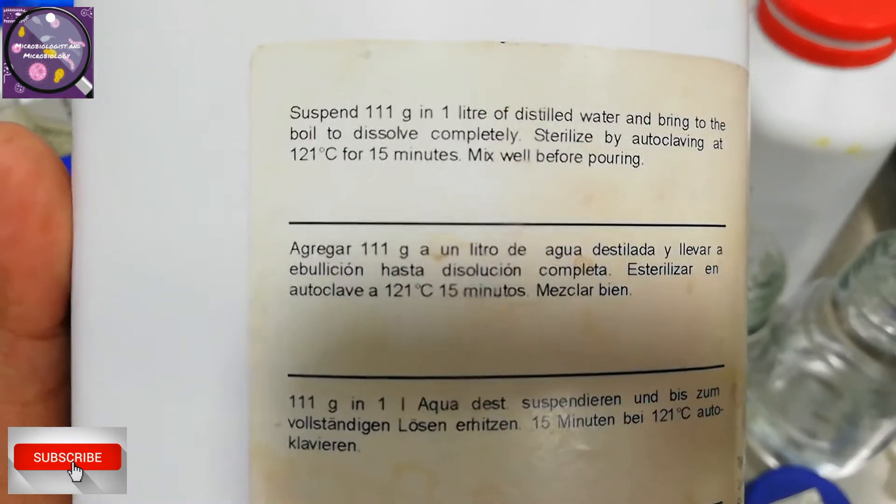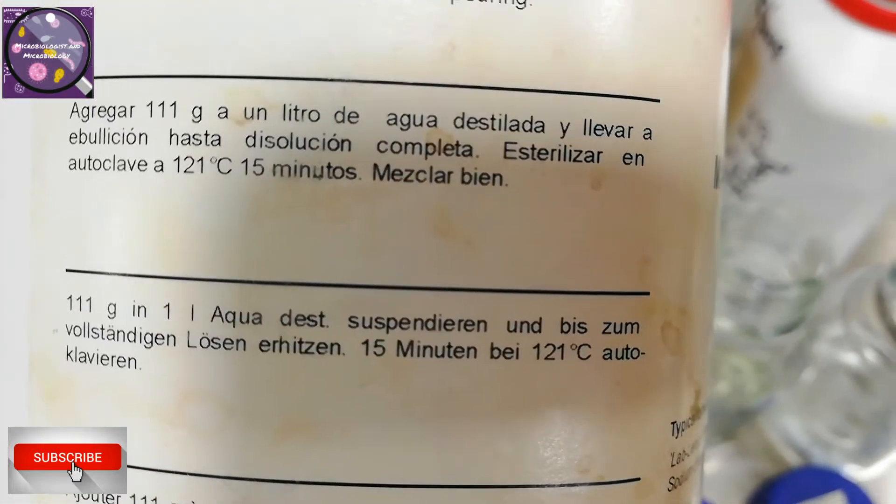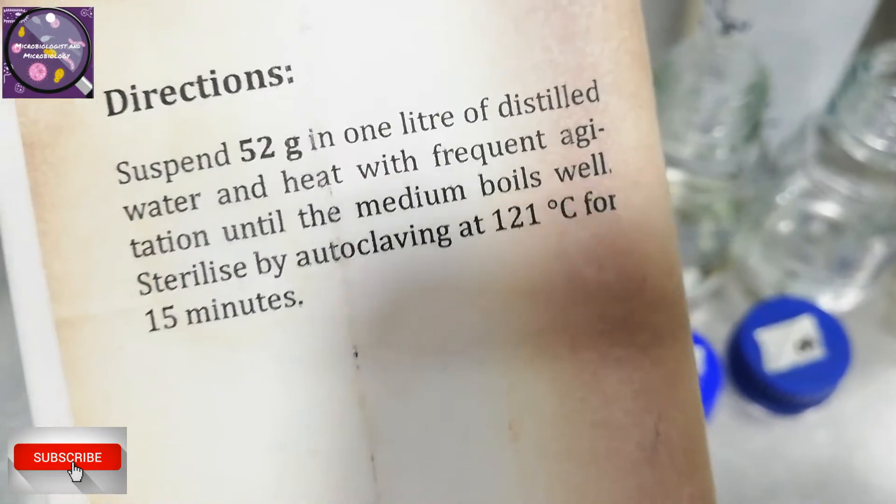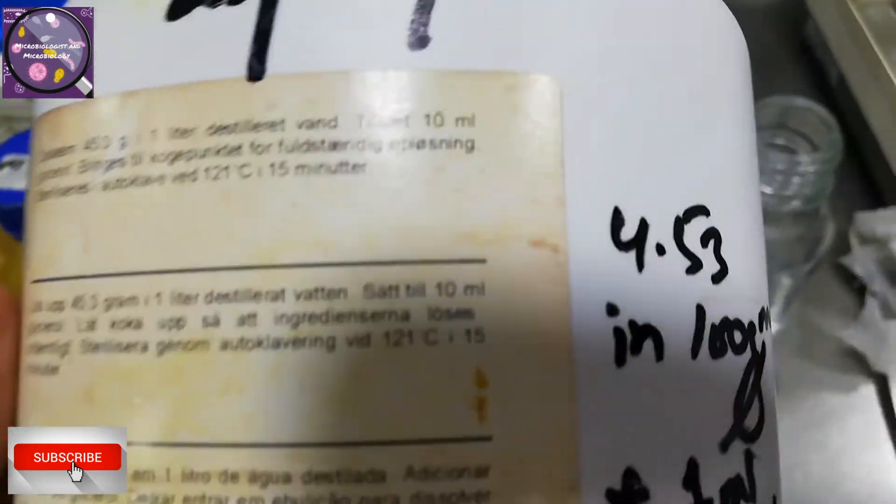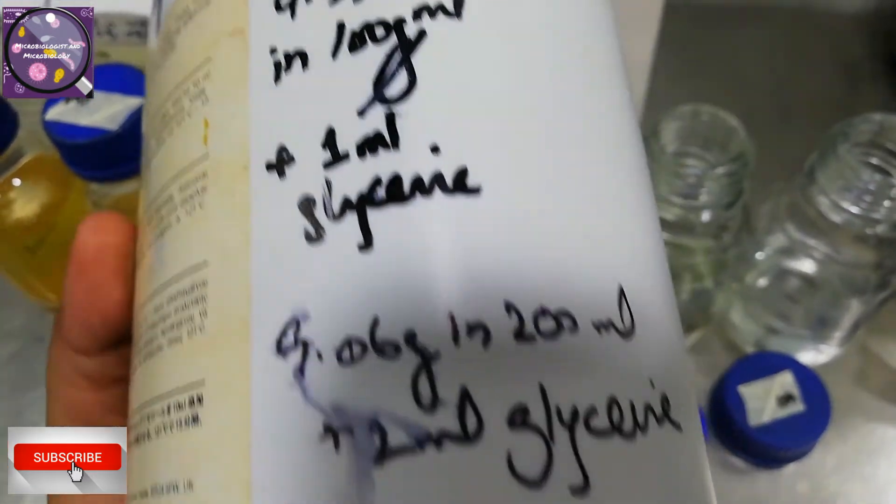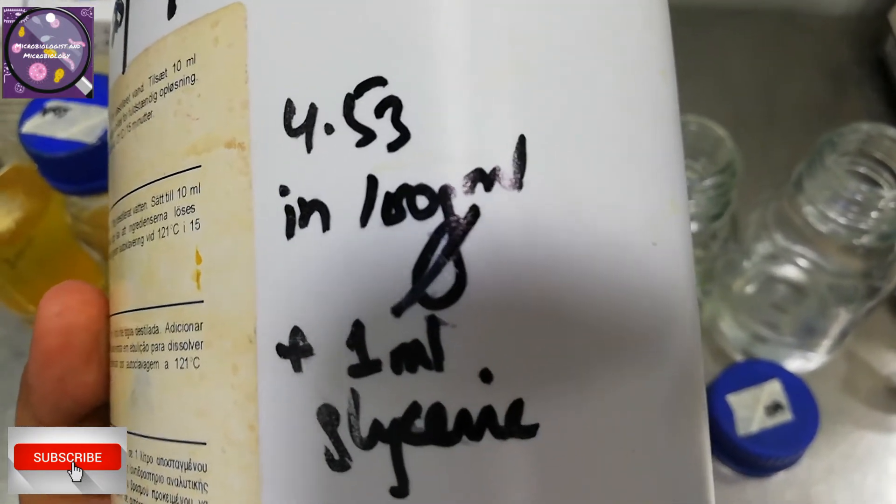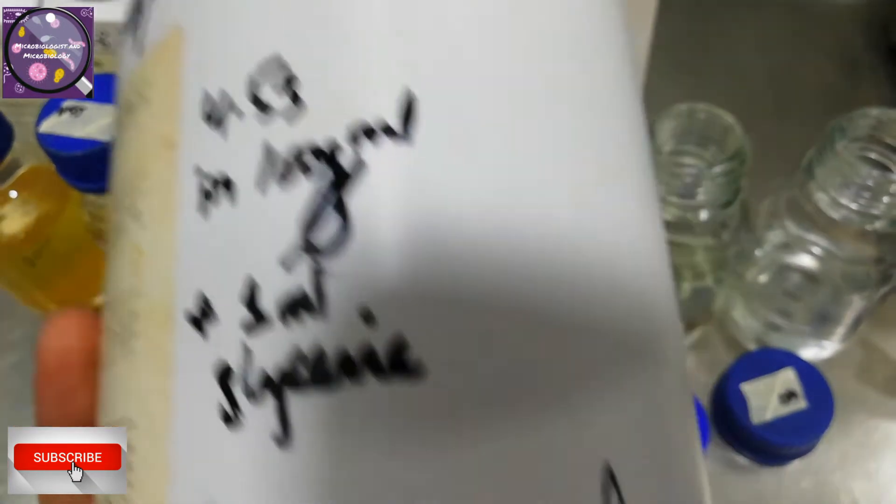For mannitol salt agar it's written as 111 grams required for 1 liter so I will use 11.1 grams for 100ml. This one is the dehydrated media for McConkey agar and it says 52 grams for 1 liter. I mentioned already to do easy work, like for 100ml we need 5.2 grams. For cetrimide agar that is the selective media for Pseudomonas aeruginosa, it is written as 45.3 grams in 1 liter plus 10ml glycerol. I calculated as 4.53 grams in 100ml plus 1ml glycerol. I also mentioned for 200ml to make my life easy. It is very useful when you write the calculated grams per ml on media bottles so you will not have to use calculator on daily basis.